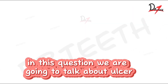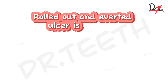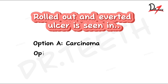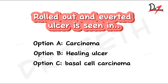In this question we are going to talk about ulcer rolled out and averted edges. The options are: option A - carcinoma, option B - healing ulcer, option C - basal cell carcinoma, and option D - tuberculosis.